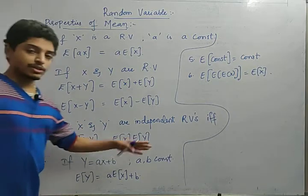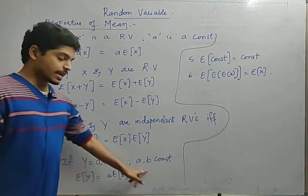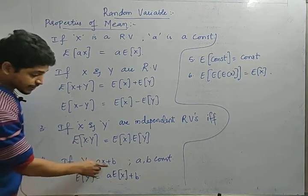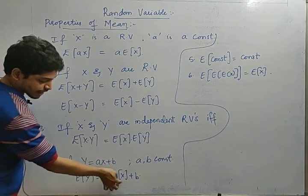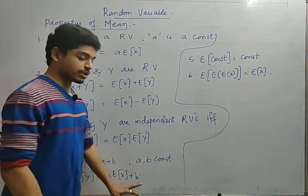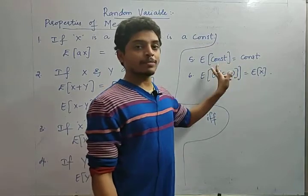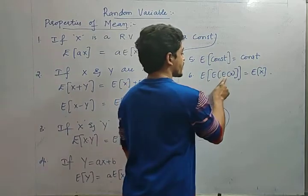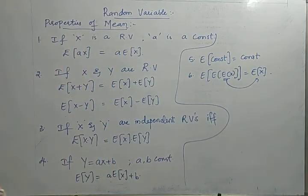Just as with independent events, if random variables are independent, E(XY) = E(X)·E(Y). If Y = aX + b where a and b are constants, then E(Y) = a·E(X) + b, because E(aX+b) = E(aX) + E(b) = a·E(X) + b — a constant comes out as itself. The expectation of a constant is always that constant: E(5)=5, E(7)=7. Also, E[E(X)] = E(X).